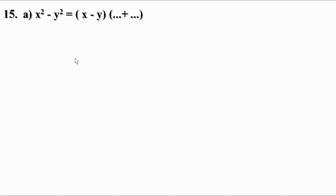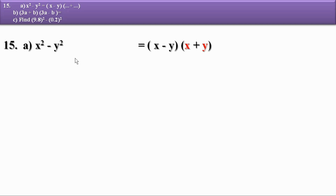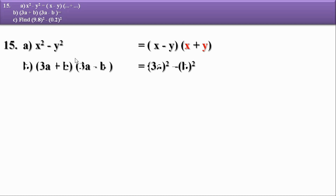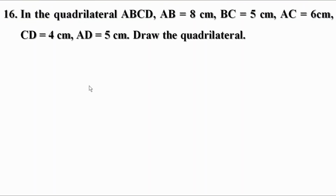Problem 15: x² - y² = (x - y)(x + y). Also, (3a + b)(3a - b) = 9a² - b². To find 9.8² - 0.2²: using the identity, 9.8² - 0.2² = (9.8 + 0.2)(9.8 - 0.2) = 10 × 9.6 = 96. Wait — that equals 1 × 9.6 = 9.6.